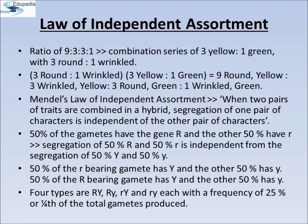The segregation of 50% capital R and 50% small r is independent from the segregation of 50% capital Y and 50% small y. Therefore, 50% of small r bearing gametes has capital Y and the other 50% has small y. Similarly, 50% of capital R bearing gametes has capital Y and the other 50% has small y. Thus there are 4 genotypes of gametes — 4 types of pollens and 4 types of eggs: capital RY, capital Ry, small rY, and small ry — each with a frequency of 25% of the total gametes produced. Writing these 4 types on the sides of a Punnett square makes it very easy to derive the composition of the zygotes that give rise to the F2.